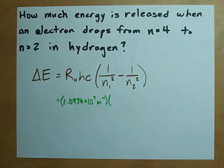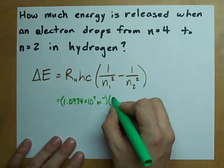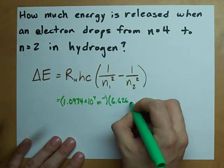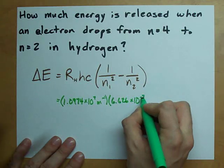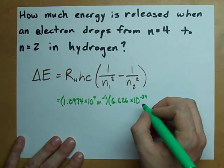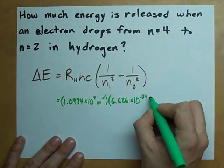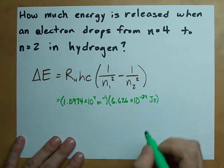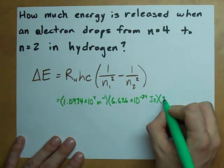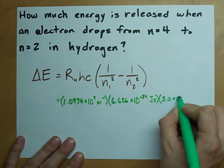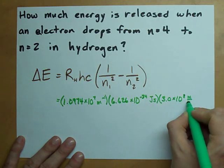h is the Planck's constant. h has a value of 6.626 times 10 to the minus 34. The units of that are joules seconds. c is the speed of light. That's 3.0 times 10 to the 8. It's in meters per second.